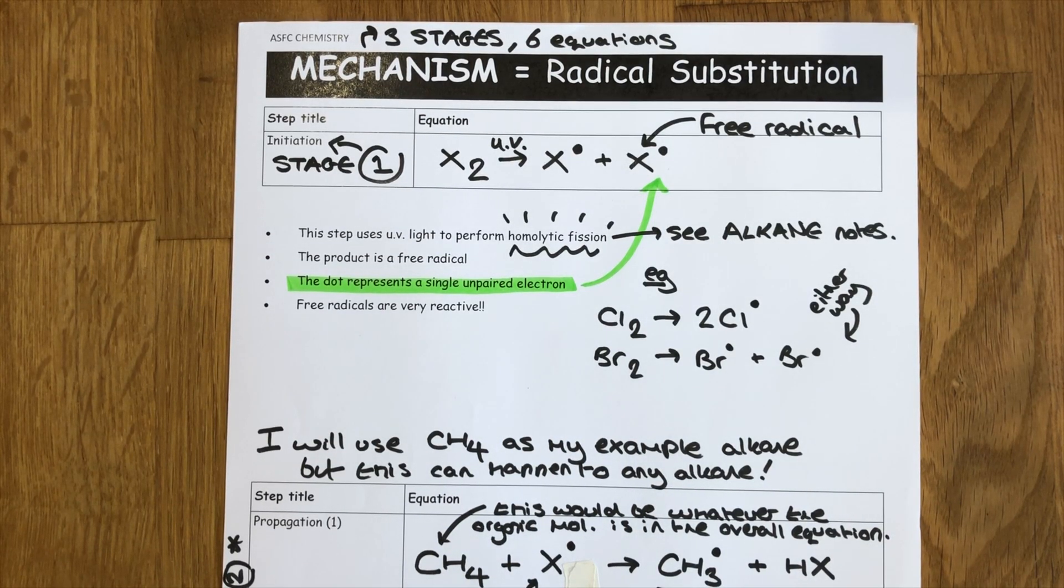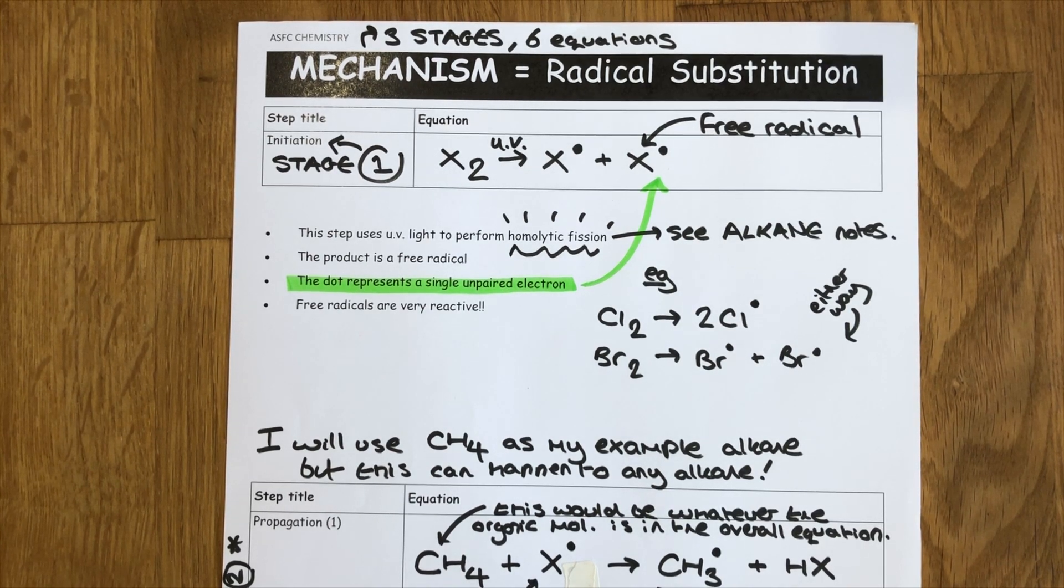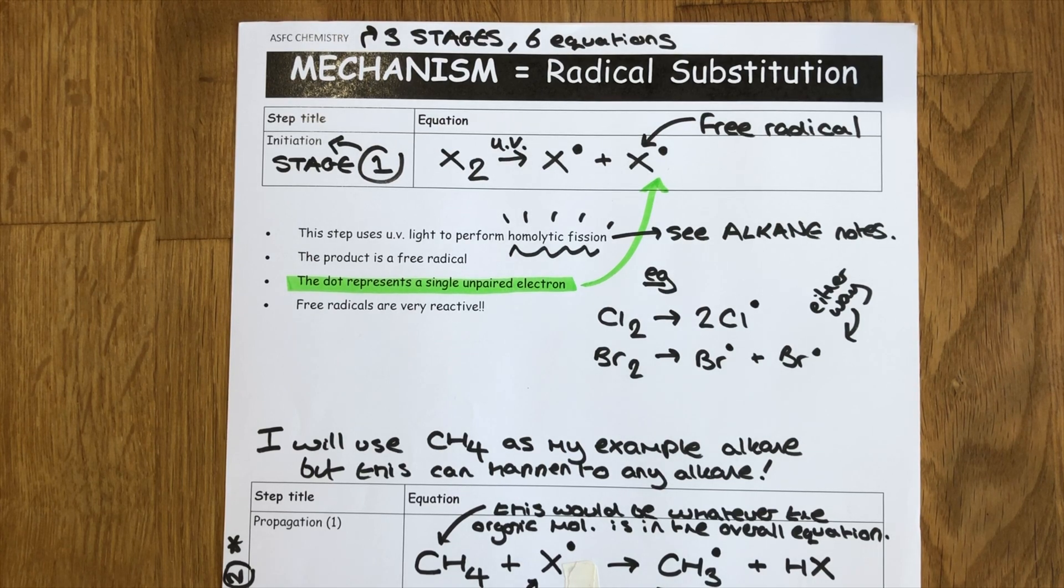What we just saw was our first example of a substitution reaction. Now we've got our first example of a reaction mechanism for organic chemistry. A reaction mechanism tells you more details about the overall that you see in the reaction equation. In the exam they will separately ask you to outline the mechanism, a radical substitution, for the reaction we've just seen.